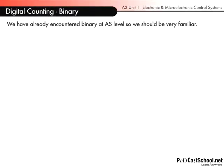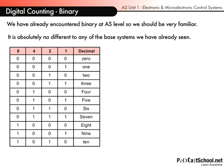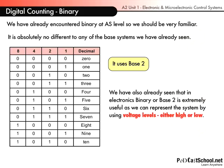Now binary. We've been through binary before at AS level so this should be very familiar. Here is a representation of binary from 1 through to 10. It uses base 2 because there are only two digits — 0 and 1. When we get to 1 we have to reset and so on. You may not have thought of it as base 2 before, but indeed it is. We use binary because it's very easy to represent in electronics — it's either on or off, a high voltage or a low voltage.